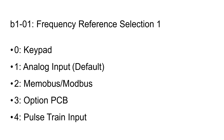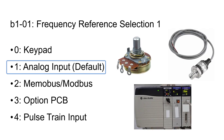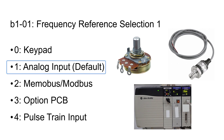The drive has five different ways to input a frequency reference. Setting 0 is the keypad. Setting 1 is an analog input, 0 to 10 volts or 4 to 20 milliamps. By default, the drive looks for a frequency reference from the analog input A1.